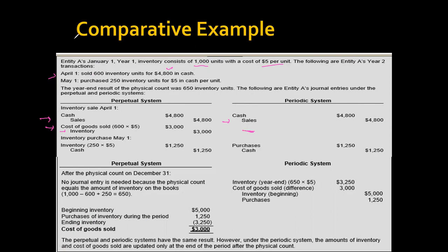When new stock is purchased, the perpetual system records: debit Inventory and credit Cash. In the periodic inventory system, everything is recorded under one temporary account called Purchases: debit Purchases and credit Cash.